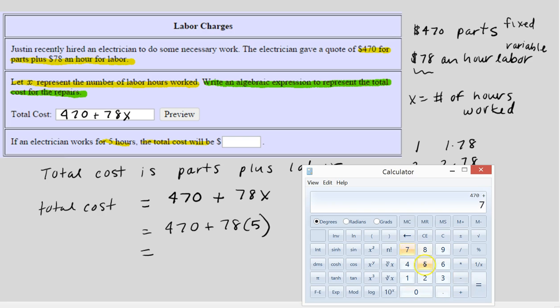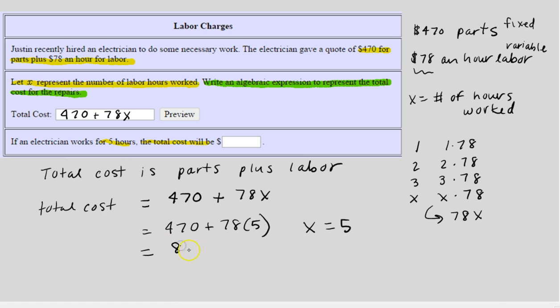So 470 plus 78 times 5, which gives us $860. So if the electrician works 5 hours, the total cost will be $860.